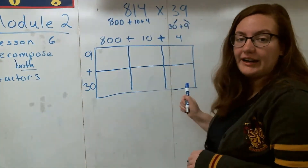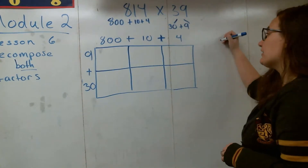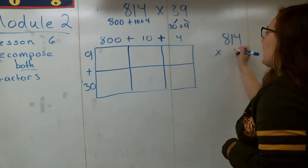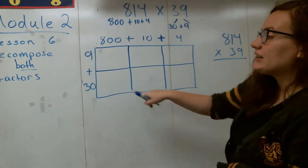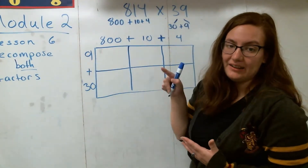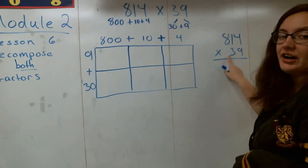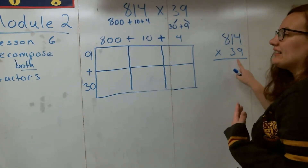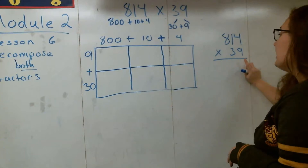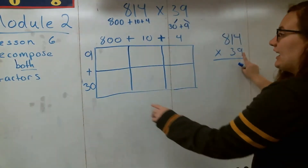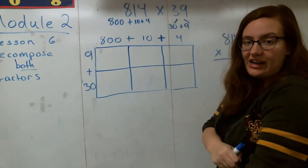I'll write 9 and 30 on the side, and where I see the plus sign, I'll draw a line straight across to show all the different parts. I'll have the standard algorithm off to the side: 814 times 39. The reason why I like to have 9 on the top row is that when I'm multiplying in my standard algorithm, I'm starting with this 9. I like to connect these models to what I'm doing in the standard algorithm, so I do 9 times 4, 9 times 10, and then 9 times 800.